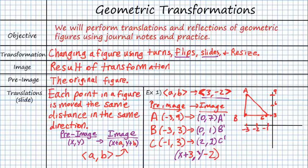We have A prime, and that's going to be at 0, 7. So that'll be somewhere in here. And then B prime is going to be at 0 comma 1. So that'll be somewhere in here. And then we have C prime, which is going to be at 2 comma 1. So that'll be out here.